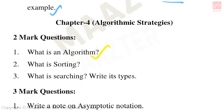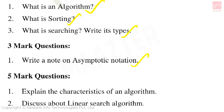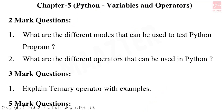Chapter 4: Algorithmic Strategies. Important 2-mark questions: What is an algorithm? What is sorting? What is searching? Write its types. Important 3-mark questions: Write a note on asymptotic notation. Important 5-mark questions: Explain the characteristics of an algorithm. Discuss about linear search algorithm. In searching techniques, linear search and binary search are very important, and sorting methods in this unit are also very important topics.